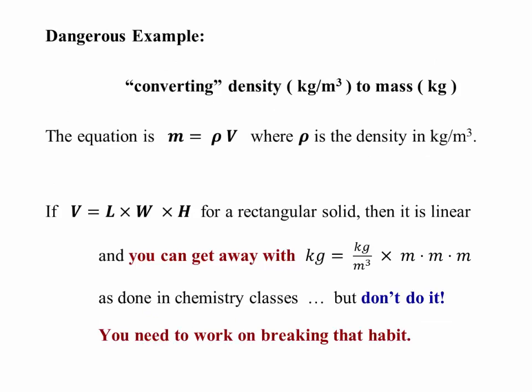But a more dangerous example involving volume. If you want to convert a density to a mass, in chemistry you'll often just do a simple dimensional analysis argument where you say, kilograms per cubic meter, I need to multiply that by three meters. A meter for length, a meter for width, and a meter for height. And that's fine if you've got a rectangular solid. You can get away with it. But don't do that in physics.